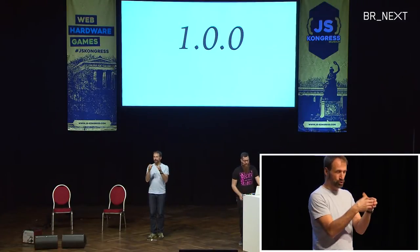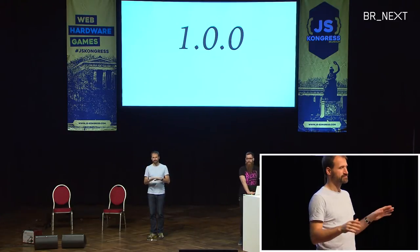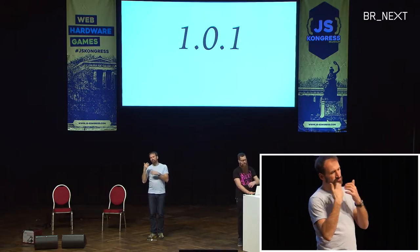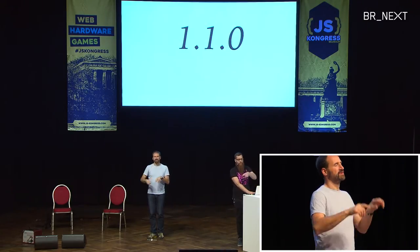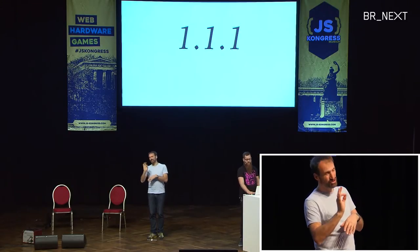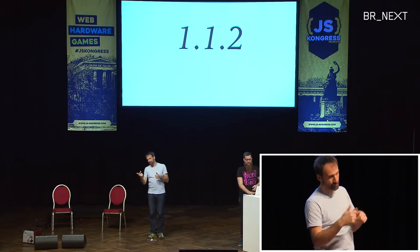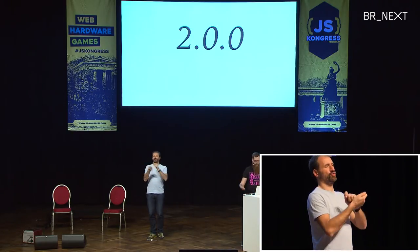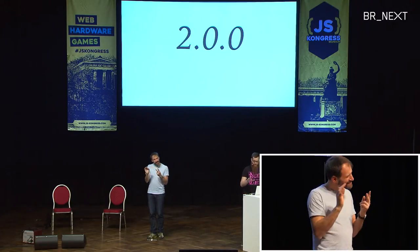Let's run through an example. When you start a new module it gets version 1.0.0. You made a bug, somebody reported it, you fix it, release a new version — it's 1.0.1. We bump the fix version. We introduce a new feature — we get 1.1.0; the fix version resets to zero. We introduce a breaking change and release 2.0.0. This is absolutely critical: you have to bump the breaking version number when you make a breaking change. People keep using version numbers for marketing reasons and inducing breaking changes in between, and that just leads to pain for everyone.